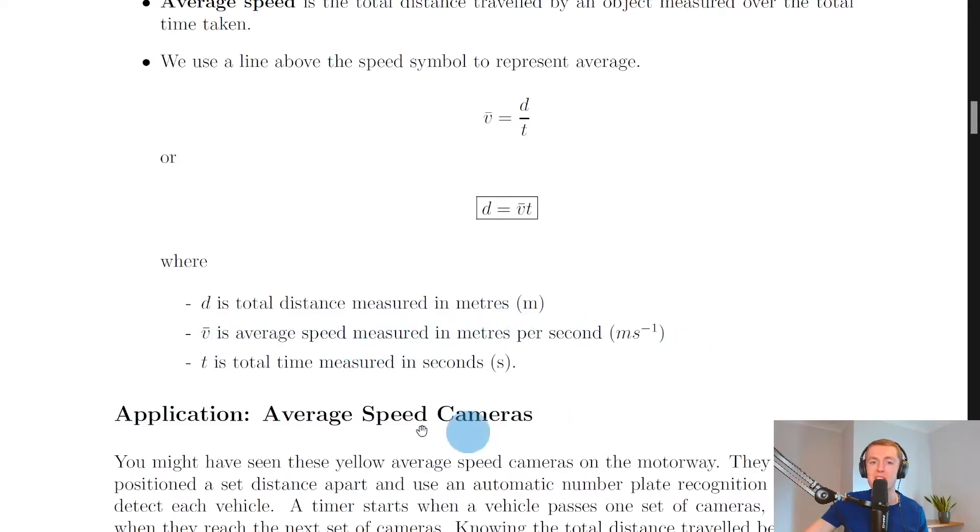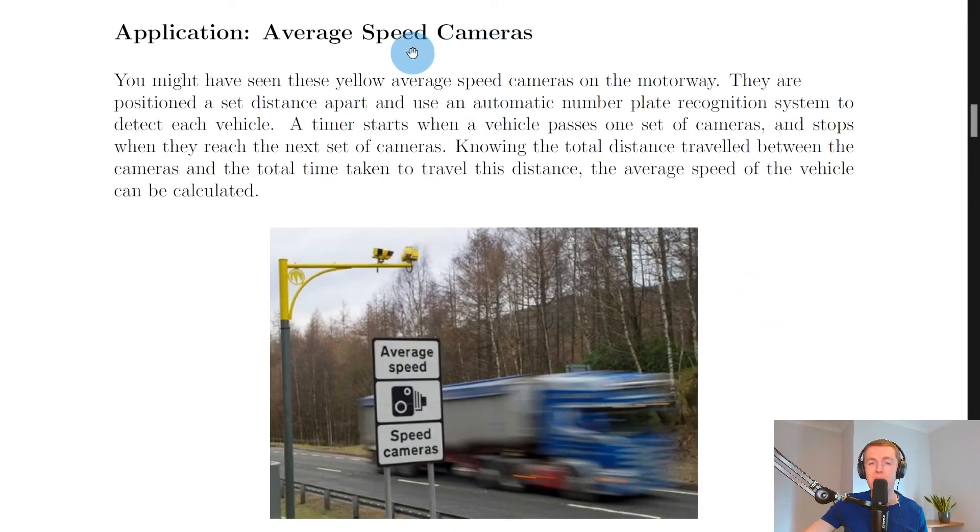We then have average speed cameras, which is an application of average speed. And it says here that you might have seen these yellow average speed cameras on the motorway.